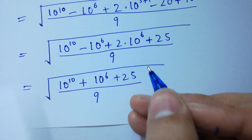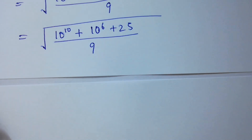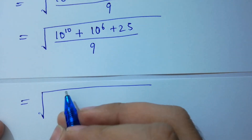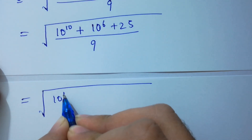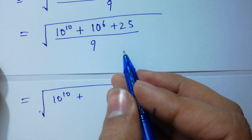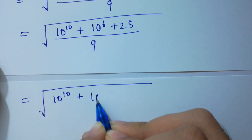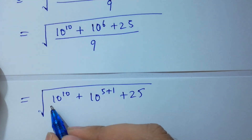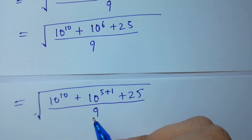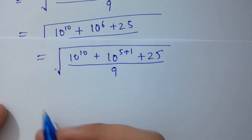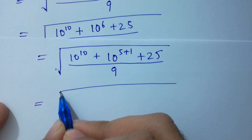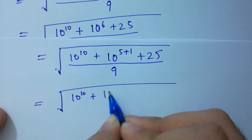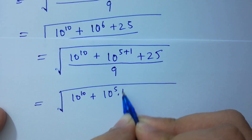Next, we have ten to the power 10, ten to the power 10, plus ten to the power 5, plus 1, plus 25 as it is, over 9. And next, ten to the power 10, we have ten to the power 10, plus ten to the power 5, times ten to the power 10 as it is, plus 25 over 9.